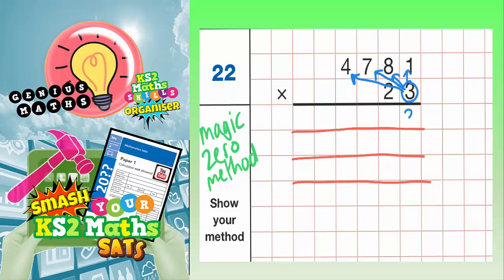Here we go. Three ones are three. Three eights are 24. Put the four in, carry the two. Three sevens are 21, plus the two is 23. Put the three in, carry the two. Three fours are 12, plus the two is 14. Put the four in, carry the one. But because we've run out of columns, that one can just go straight in like that.